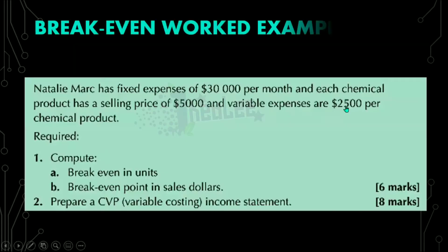Let us now look at a question. This question is taken from the Collins Keep Accounting Study Guide. Natalie Mark has fixed expenses of $30,000 per month, and each chemical product has a selling price of $5,000, and variable expenses are $2,500 per chemical product.